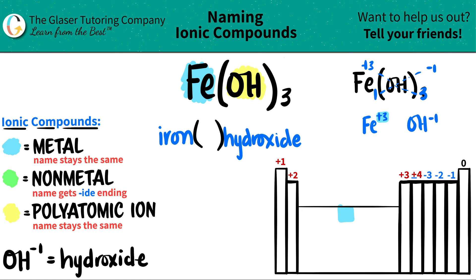So what I have to put in my Roman numeral, if I could just maybe squeeze this a little bit, I just have to put a three Roman numeral. One, two, three. And now I am done. So Fe(OH)3 is just iron three hydroxide.